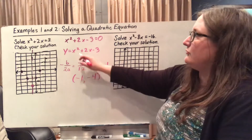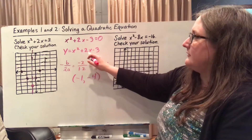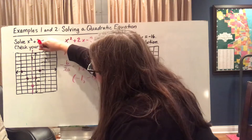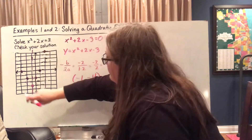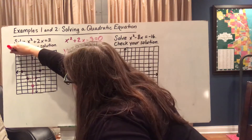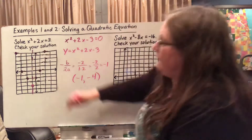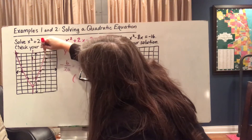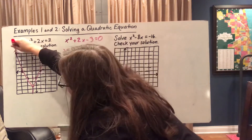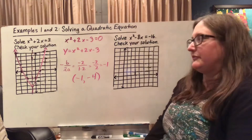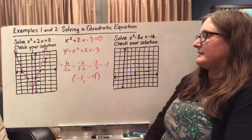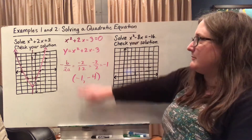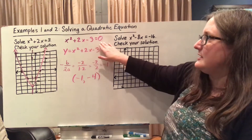If I plug in 2, 2² + 2(2) - 3 gives me 5. So I'm going to have (2, 5) and over here (-4, 5). So I can draw in my parabola here. Now, specifically what I'm looking for are x-intercepts. X-intercepts are basically my zeros of my equation — they're my solution when it's equal to 0.